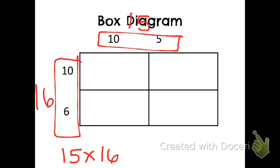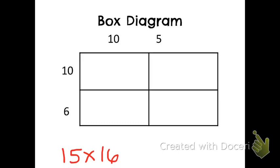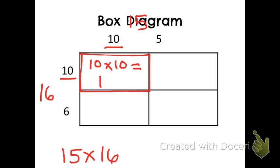I want you to make sure that you're actually writing in the numbers that you will multiply together. So in this first box, I'm multiplying what I have here and what I have here. So I do 10 times 10, which equals 100.